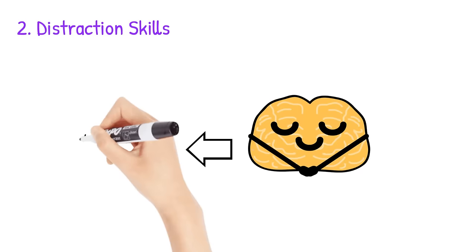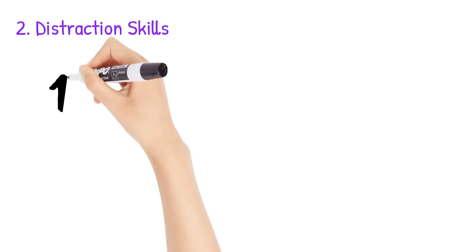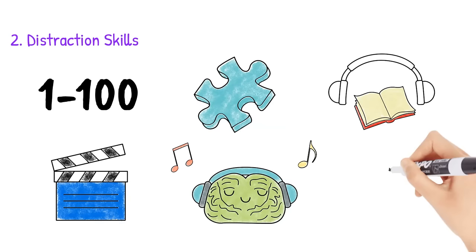Examples of distraction skills for anxiety include counting from 1 to 100, listening to music, reading or listening to an audiobook, watching a movie, doing a puzzle, or engaging in a hobby.